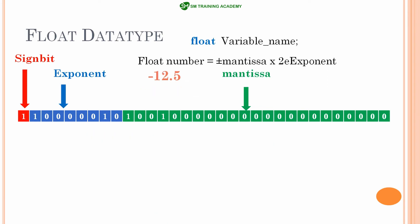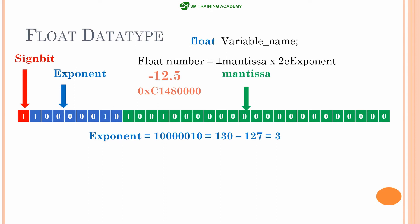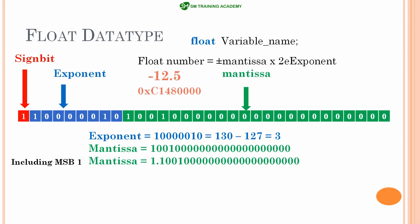Now let's take the negative number −12.5 and understand how it is stored in memory. The hexadecimal representation is 0xC1480000. Converting to binary gives the 32-bit representation. The exponent bits are 100000010, which is 130 in decimal; subtracting 127 gives 3, so the exponent is again 3. The mantissa is 10010000..., and adding the hidden MSB gives 1.1001000000...